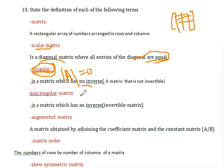Non-singular matrix is a matrix which has an inverse, or is invertible.